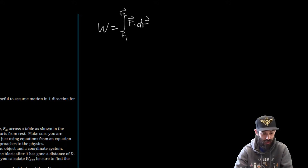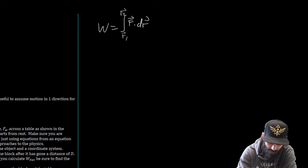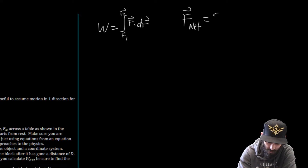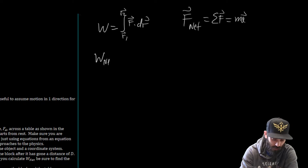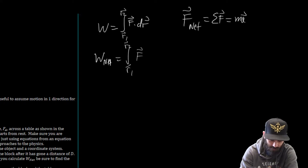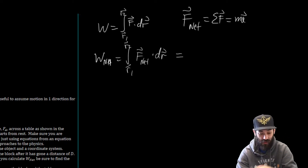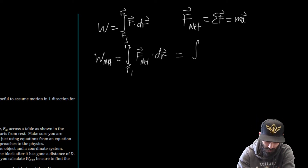This brings us into Newton's second law. Newton's second law says that the net force, which is the sum of the forces, is going to be equal to mass times acceleration. So if we want to find what the net work is, we say the net work is going to be equal to the integral from R vector 1 to R vector 2 of the net force dot dr.